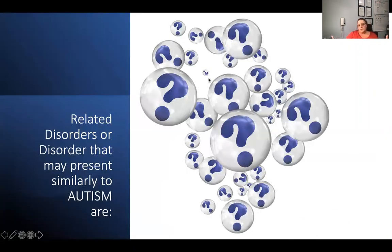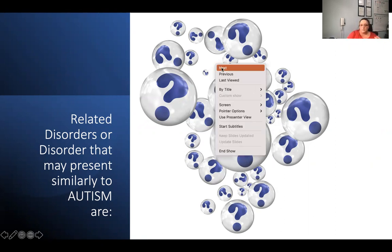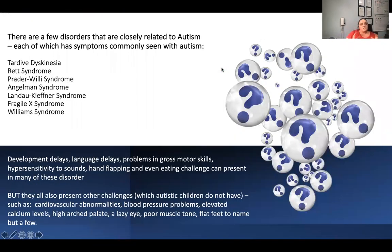There are related disorders that may present very similarly to autism. When you start looking at general developmental delays — language delays, problems with gross motor development or clumsiness, hypersensitivity to sounds, hand flapping, even eating difficulties — these kinds of things can present themselves in a wide variety of disorders.